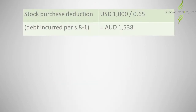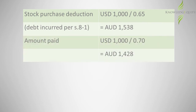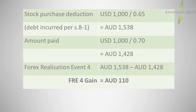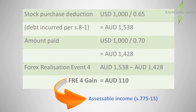Aussie Pty Ltd purchases trading stock from overseas for US$1,000 on 30-day credit terms. The stock became on hand when delivered to the shipping agent on August 1, when the currency spot rate was 0.65. Aussie then paid the US$1,000 debt on August 30, when the spot rate was 0.7. The FRE4 gain of $110 is included in assessable income in accordance with section 775-15. Remember that if this was a loss, it would be included as a deduction under section 775-30.